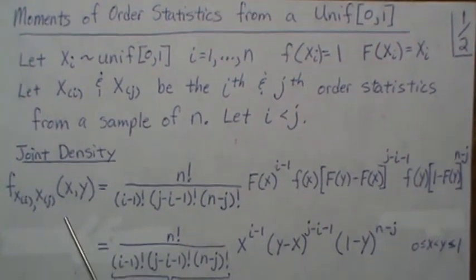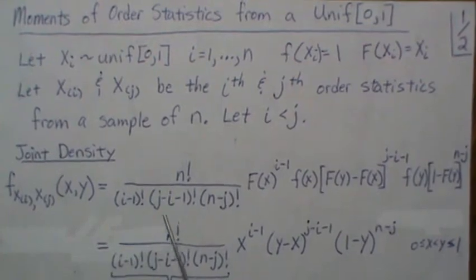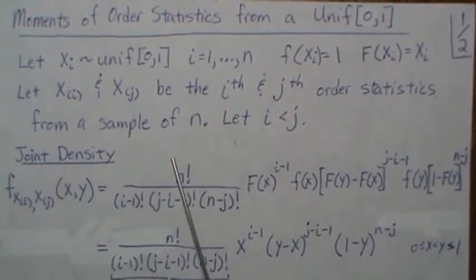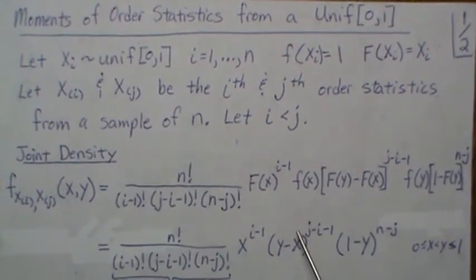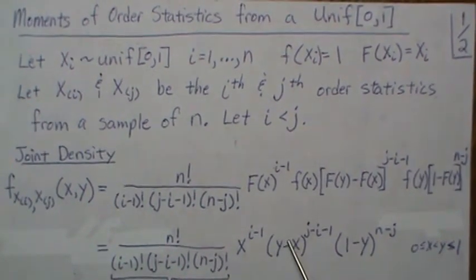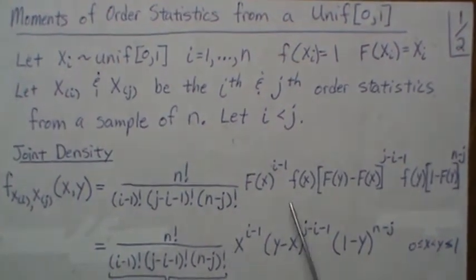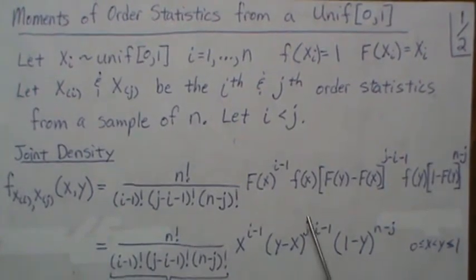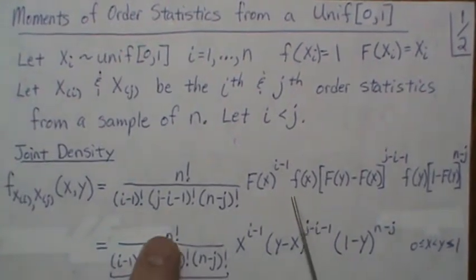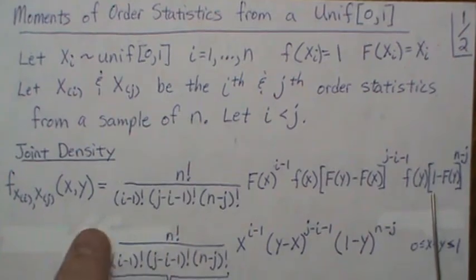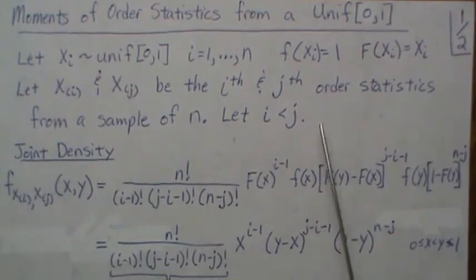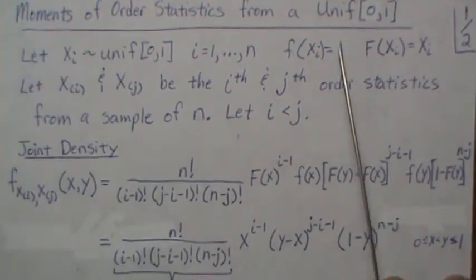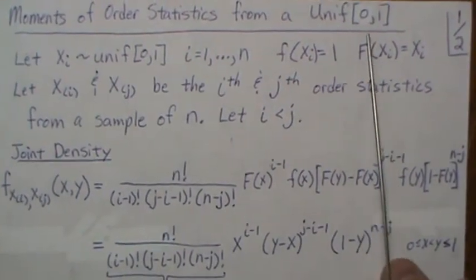Now the joint density between these two order statistics can be derived to be this form. I have a video called Deriving the Joint PDF of Order Statistics that may provide some insight in how this is derived. But now, so this is generically the joint density, but we have to plug in the CDF and density for the case that we're in, which is the uniform 0 1.